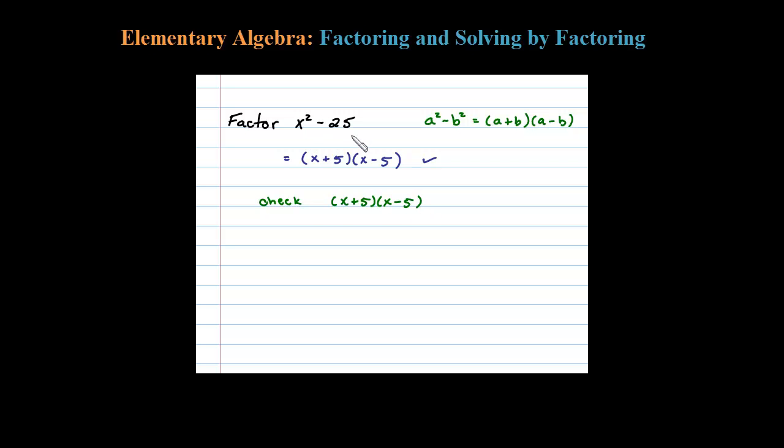Multiplying requires us to distribute, so we have x squared minus 5x plus 5x and then minus 25. Notice difference of squares, these middle terms add to 0. Negative 5x plus 5x is 0, so that leaves us with x squared minus 25.